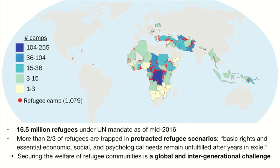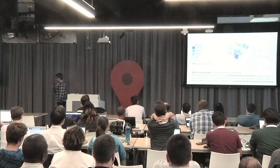So this is a global problem. 16.5 million refugees under UN mandate as of the middle of last year. More than two-thirds of the global refugee population is in what the UNHCR calls a protracted refugee scenario — where basic rights and essential economic, social, and psychological needs remain unfulfilled after years. Given that refugee camps persist on average 19 years, this is an intergenerational problem as well as a global problem. Securing the welfare of refugee communities is a pressing concern.